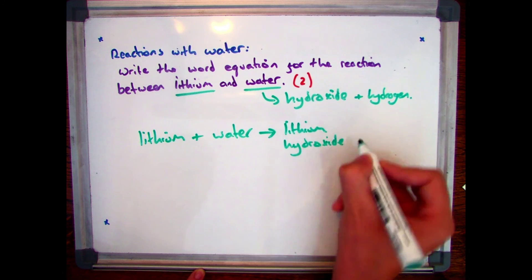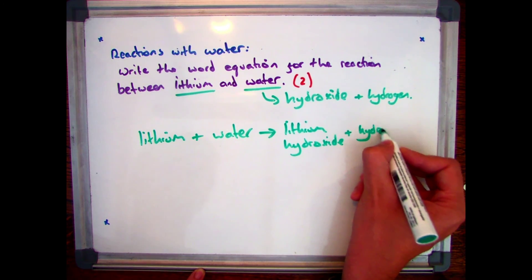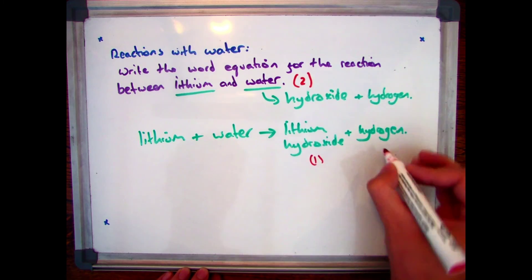So your word equation will look like this: lithium plus water will produce lithium hydroxide plus hydrogen. And that is the same with any metal plus water.